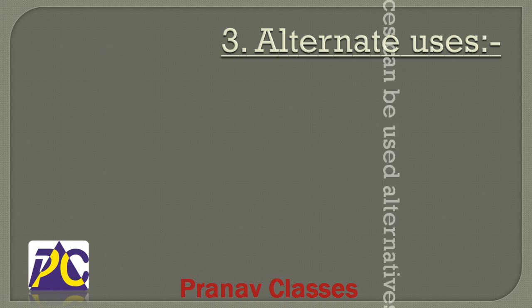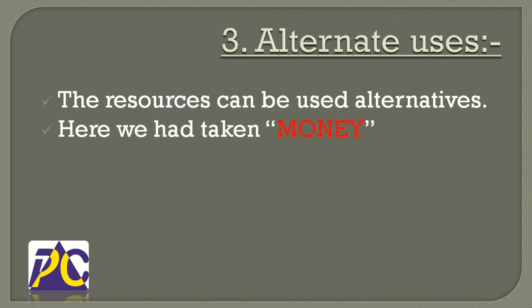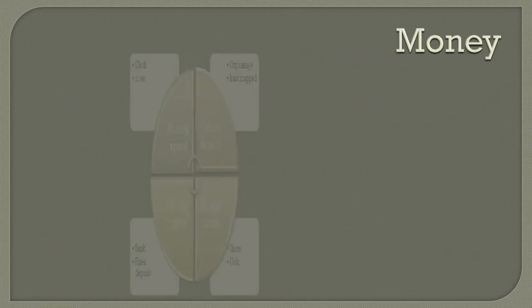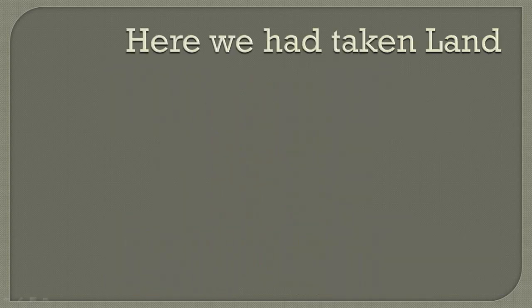Third important point: all these resources have alternate uses. For example, money can be spent either on clothes or shoes; money can be donated either to orphans or the handicapped; money can be invested in shares or gold; money can be saved in a bank fixed deposit. Therefore, a person has to choose what is most beneficial for him.